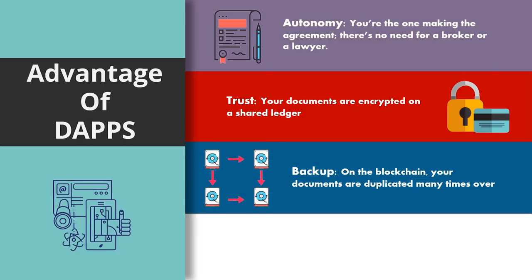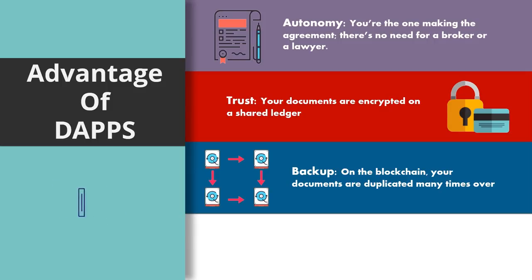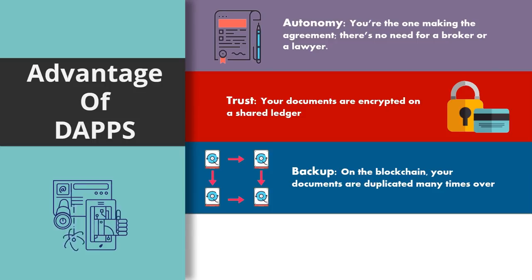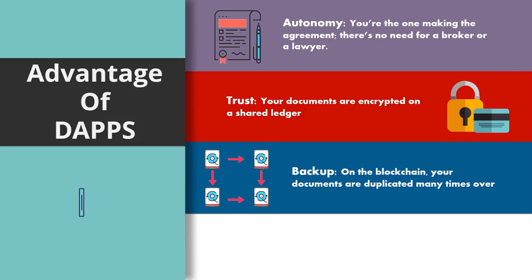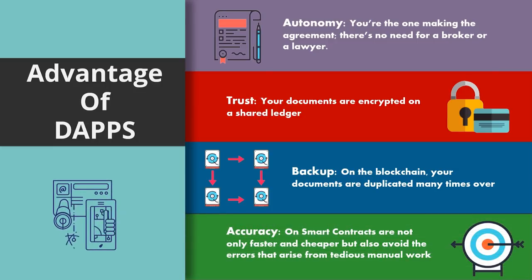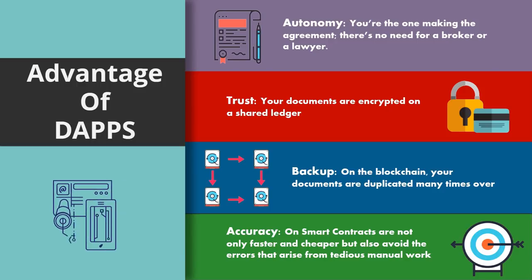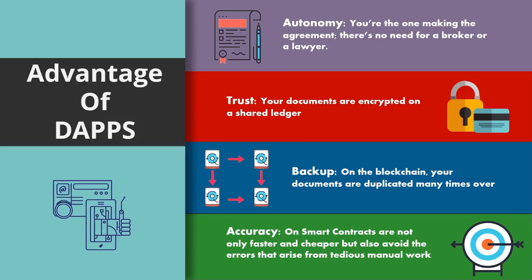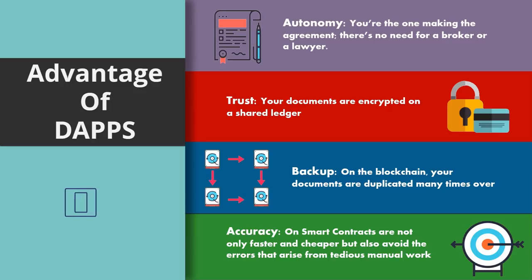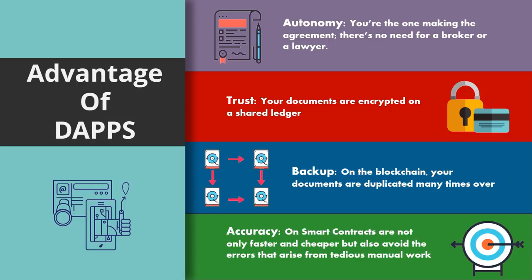Thirdly is backups. On the blockchain your documents are duplicated many many times over. Your documents are owned and seen by everybody on the Internet but in an encrypted fashion, so you do not need to worry that somebody has your copy and can see it. It's all encrypted and only you can see it, but a copy does exist — so in case you actually lose some of it, you can always go back and check your transaction IDs and get back what you wanted. Last but not least is accuracy. Whatever the smart contracts are trying to replicate — things like bidding, form completion, and such things mostly done by clerical workers — since we're talking about computers, there is no chance for any sort of mistake unless there's a bug which is fixed by the developer in no time. So accuracy, backup, trust, and autonomy are the major advantages of decentralized applications that are severely lacking in most centralized architectures.